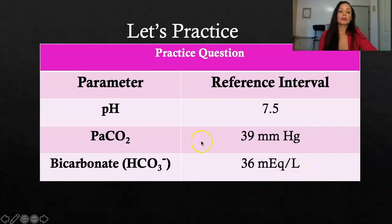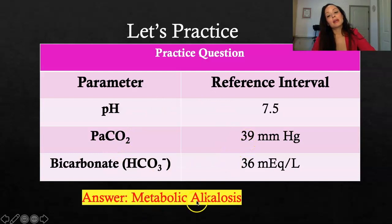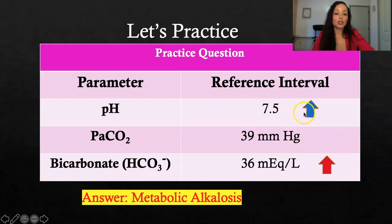Let's try another one. pH of 7.5 — is that high or low, acidic or alkalotic? CO2 of 39, bicarb of 36. The answer is metabolic alkalosis. The pH was high, the bicarb was high — arrows facing in the same direction. Just by doing the arrow trick, you will get this every time.